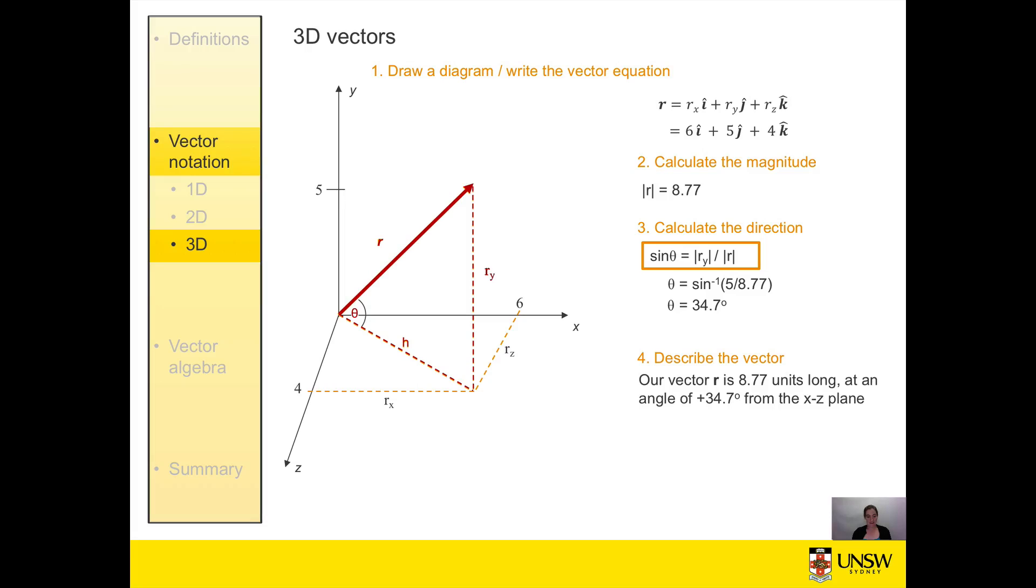Our vector description will then be something similar to: our vector is 8.77 units long and at an angle of positive 34.7 degrees from the xy plane.